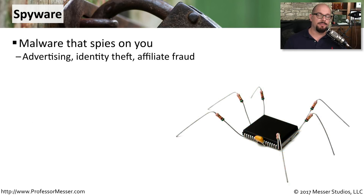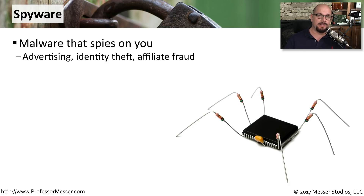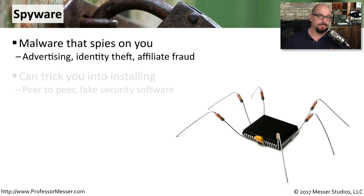Another type of malicious software is spyware. As the name implies, spyware is watching what you're doing. It may watch what websites you visit, it may embed its own affiliate codes into the sites that you visit, or it may simply wait for you to input some personal information and steal that information to use it in identity theft elsewhere.